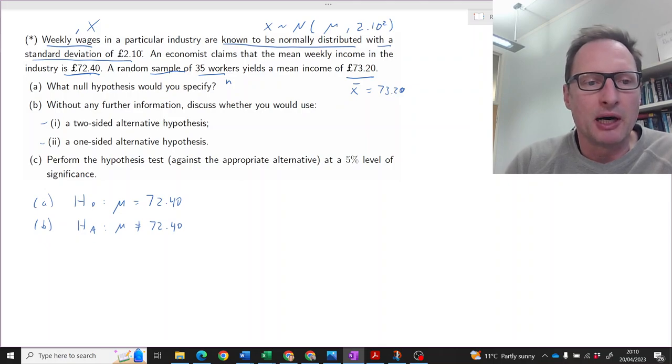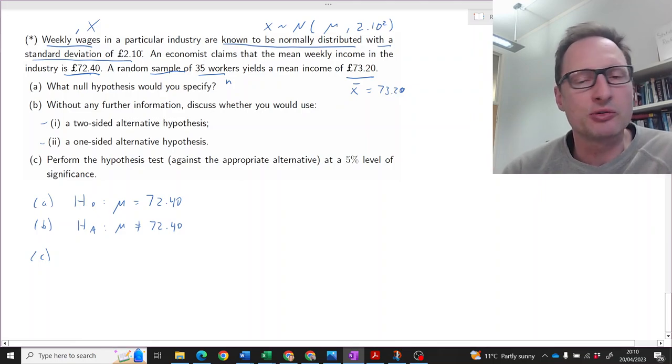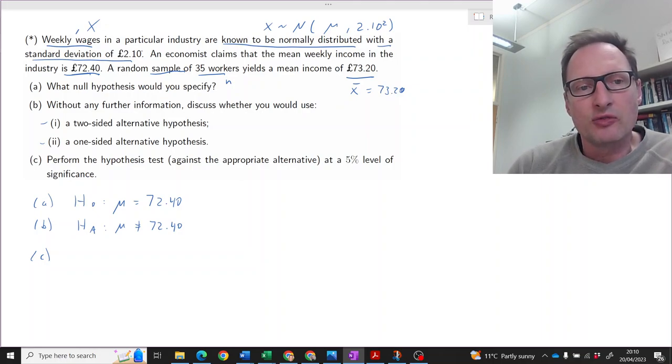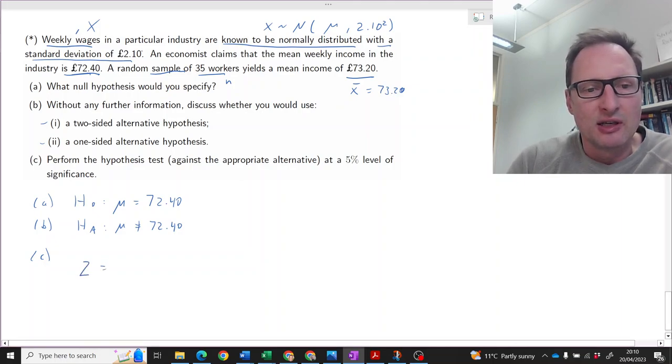So that is parts (a) and (b) knocked out of the park. Now part (c), the actual process of performing the hypothesis test. There are certain elements which we need in each hypothesis test. It's the set of hypotheses—we already have them. Then, following the hypotheses, we want to know which test statistic do we want to use. When we are testing for population means, there are basically two different types of test statistics that are in town: either a z-test or a t-test.